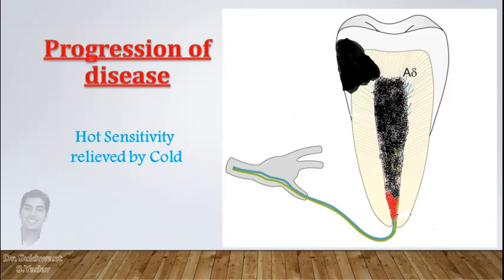Further progression of necrosis leads to complete degeneration except a little apical stump. At this stage, when the patient takes anything hot, it leads to severe pain because necrosed tissue produces gases and expands in the tooth. If the patient takes anything cold, it relieves the pain by reducing the expansion of gases. So this condition is diagnosed as hot tooth, and these cases are difficult to anesthetize.